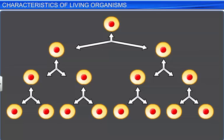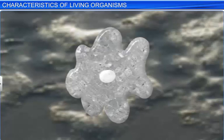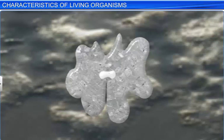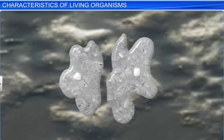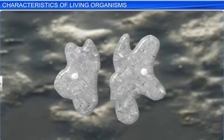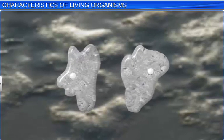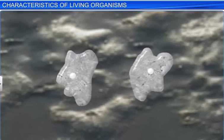In a multicellular organism, cell division results in an increase in mass. Whereas in a unicellular organism like amoeba, it leads to the formation of two new organisms.